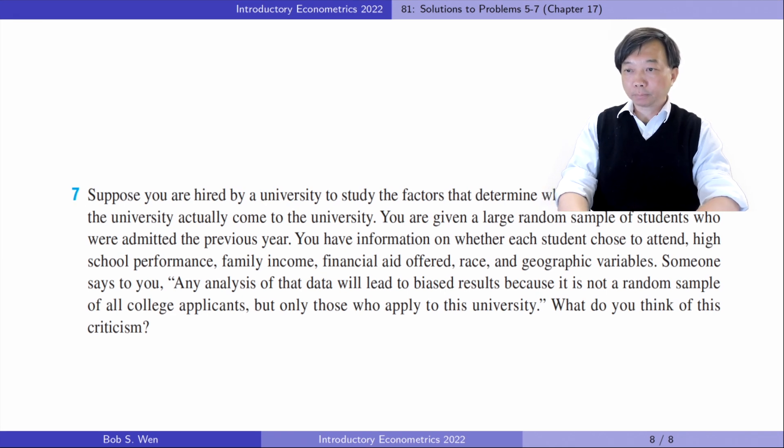Let's do problem 7. Suppose we are hired by a university to study the factors that determine whether students admitted to the university actually come to the university. You are given a large random sample of students who were admitted the previous year. Here, you have information on whether each student chose to attend, high school performance, family income, financial aid offered, race and geographic variables. Someone says to you, Any analysis of that data will lead to biased results because it is not a random sample of all college applicants, but only those who applied to this university. What do you think of this criticism?